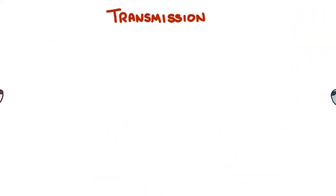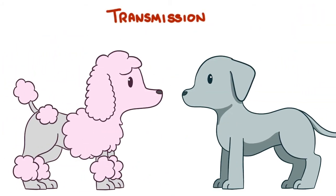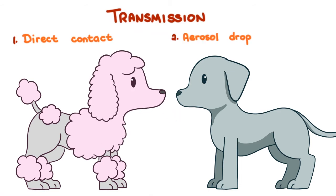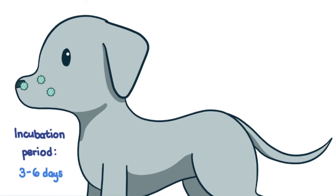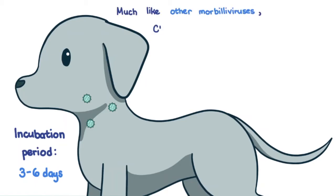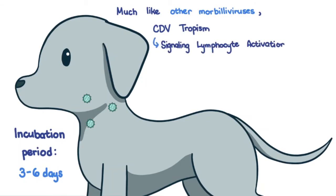Canine distemper virus is transmitted via direct contact and aerosol droplet secretions. When an animal is infected, there is an incubation period of 3-6 days. The virus replicates in the mononuclear cells of the upper respiratory tract, then migrates to the tonsils and nearby lymph nodes. Much like other Morbilliviruses, canine distemper virus likes to infect cells expressing the signaling lymphocyte activation molecule, or CD150.